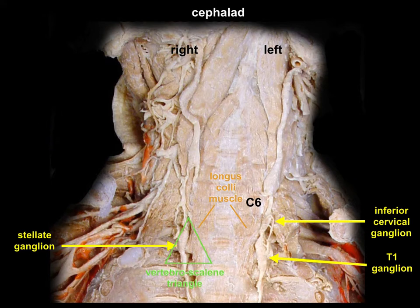The stellate ganglion is within an area called the vertebral scalene triangle. This is important because in this triangle, apart from the stellate ganglion, a lot of very crucial structures are situated, like the vertebral artery and other important things. This is the reason why we do not go for the stellate ganglion itself, which is no longer on top of the colli muscle — it is in the vertebral scalene triangle.